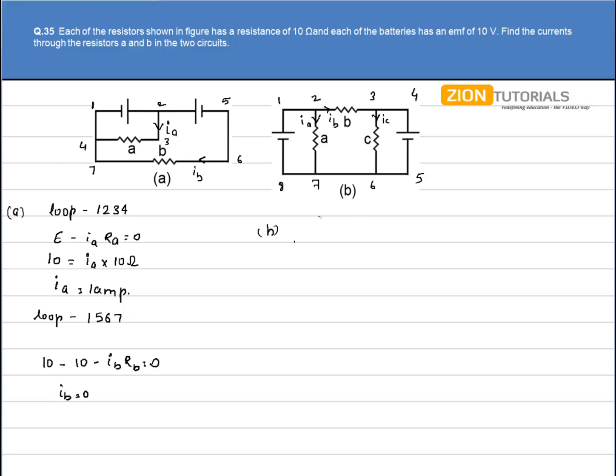In loop 1-2-7-8, if I apply Kirchhoff's law, it will be plus E minus IA into A equal to 0. So I have value of IA again as EA by RA, that is 1 ampere. In loop 3-4-5-6, again calculating the current IC.